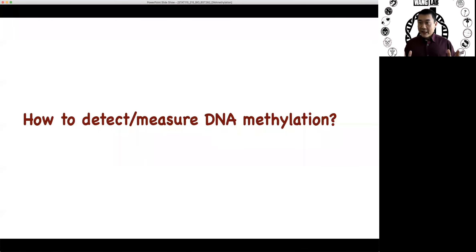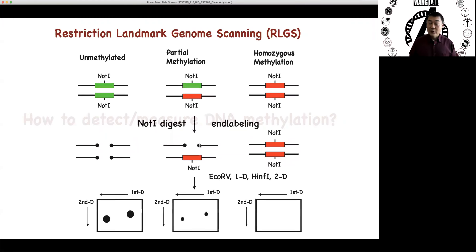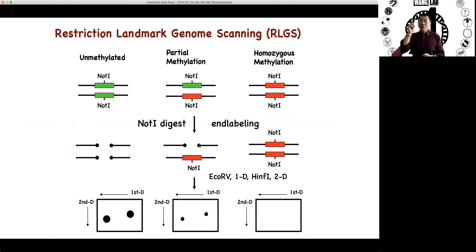Okay, so the final section is technology. We're going to talk about how do we detect, how do we measure ding mesulation? This is genomics and bioinformatics, so I'm actually going back to the very old ways of doing genomics.